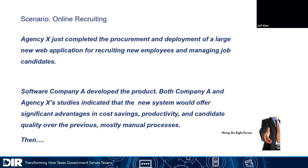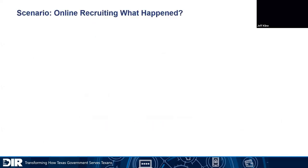Now, I know this maybe sounds like I'm telling a story, but this is the kind of stuff that happens all the time. So let's think about this and look at root causes — what happened that led us up to this whole event? Well, let's look at Agency X. They had no ICT accessibility maturity within their organization. Now, when I say ICT, a lot of us in the state call that EIR — consider those interchangeable. ICT, EIR, EIT, they're all pretty much the same.